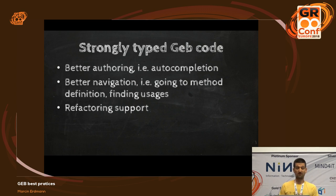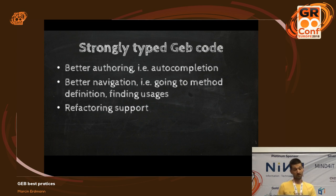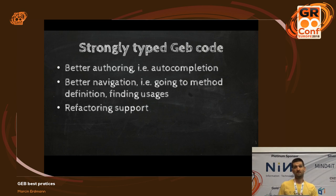You can get pretty much auto-completion everywhere. You can get better navigation, which means that if IntelliJ understands which methods you're calling on your pages and modules, you can basically drill down into them and see the definitions. Same goes for content definitions. And if you strongly type your JEP code, you're going to get some refactoring support as well, so you will be able to easily rename methods on your modules and pages.